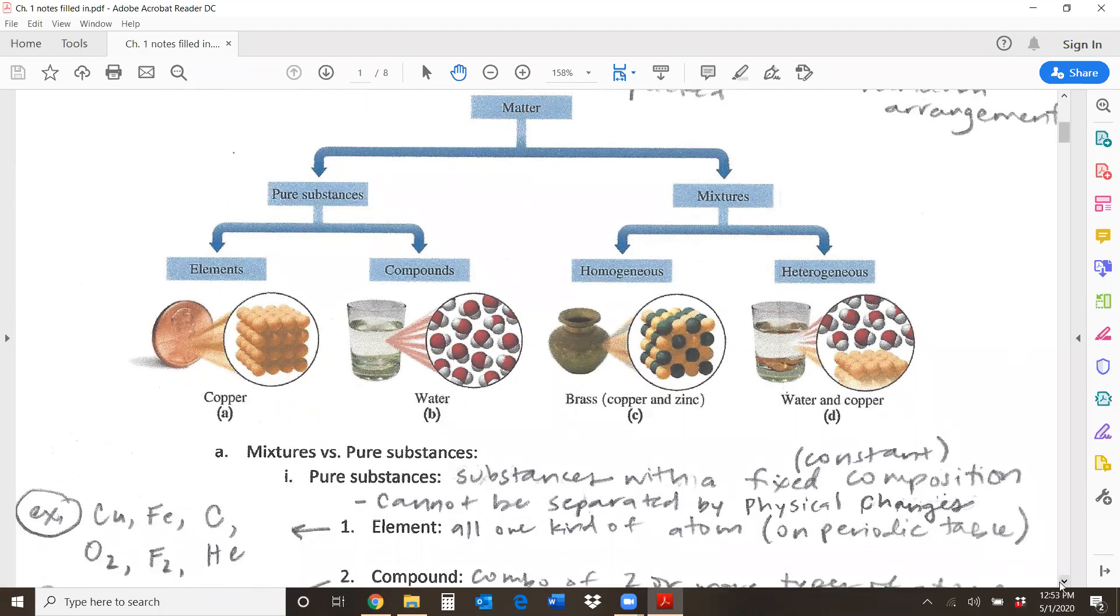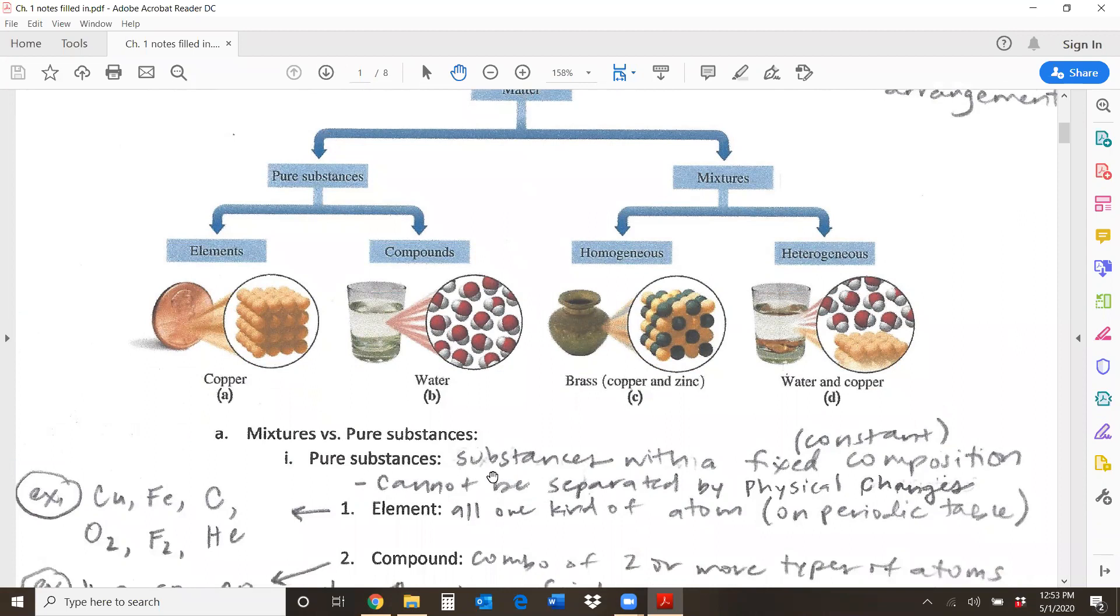Pure substances first. What a pure substance is, is a substance with a mixed or constant composition, meaning it will always be the same no matter where you find it. So if you have pure water and nothing else in it, water here will be exactly the same as water in a different lab, as long as it is a pure substance and it is only made up of pure water.